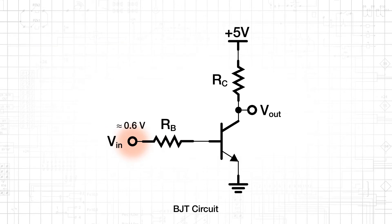When Vin is approximately 0.6 volts, the BE junction begins to conduct. The base current IB, which is limited by the base resistor RB, determines the collector current, IC equals beta IB.